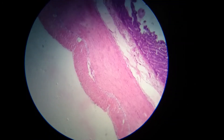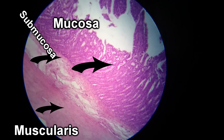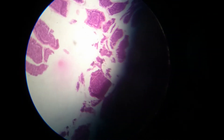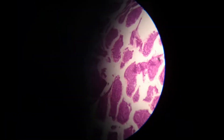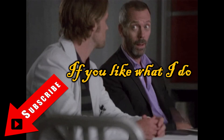Here is the muscularis and the submucosa — no special structures, no glands, no lymphatic aggregations. That covers the small intestine histology. Thank you very much.